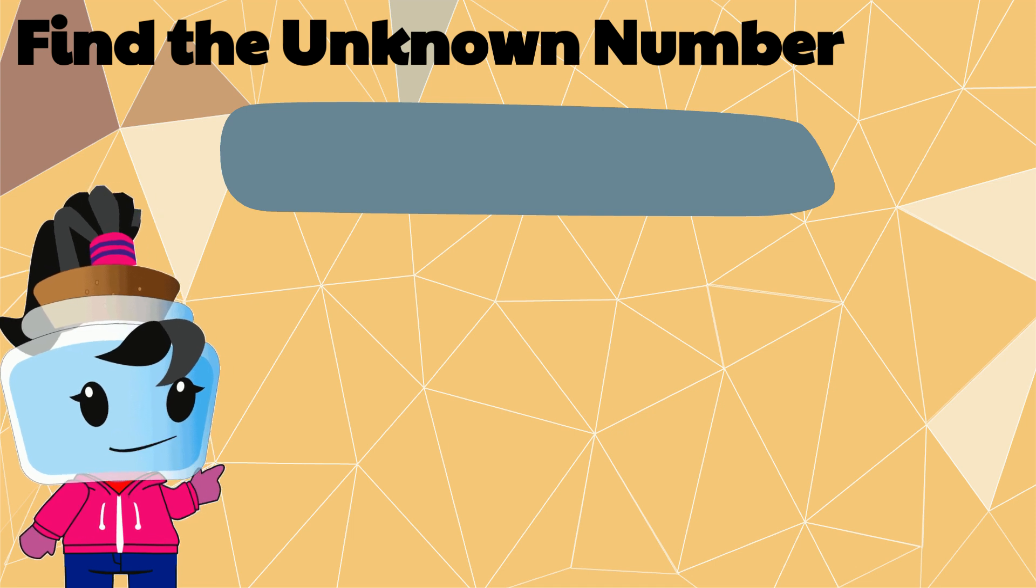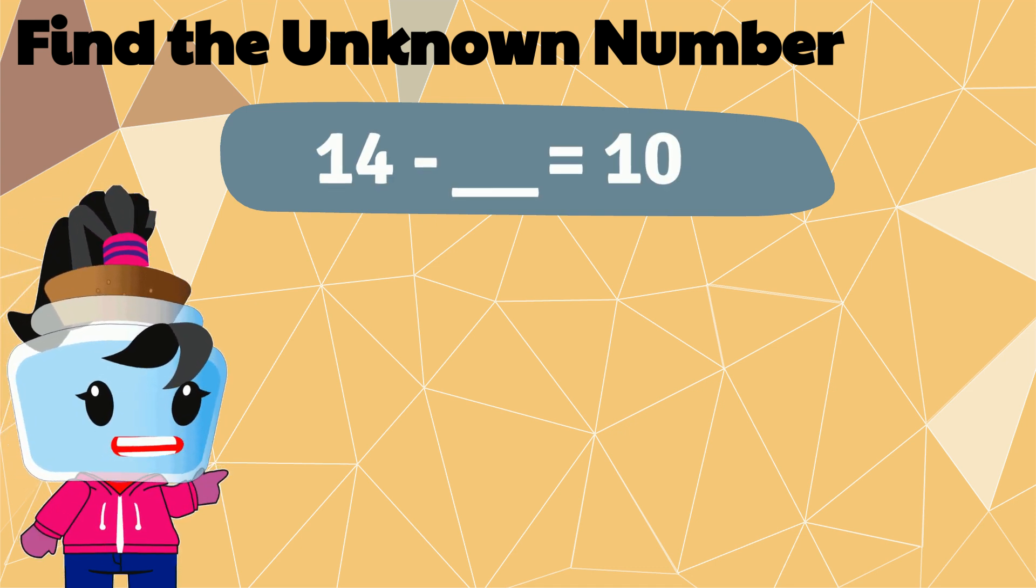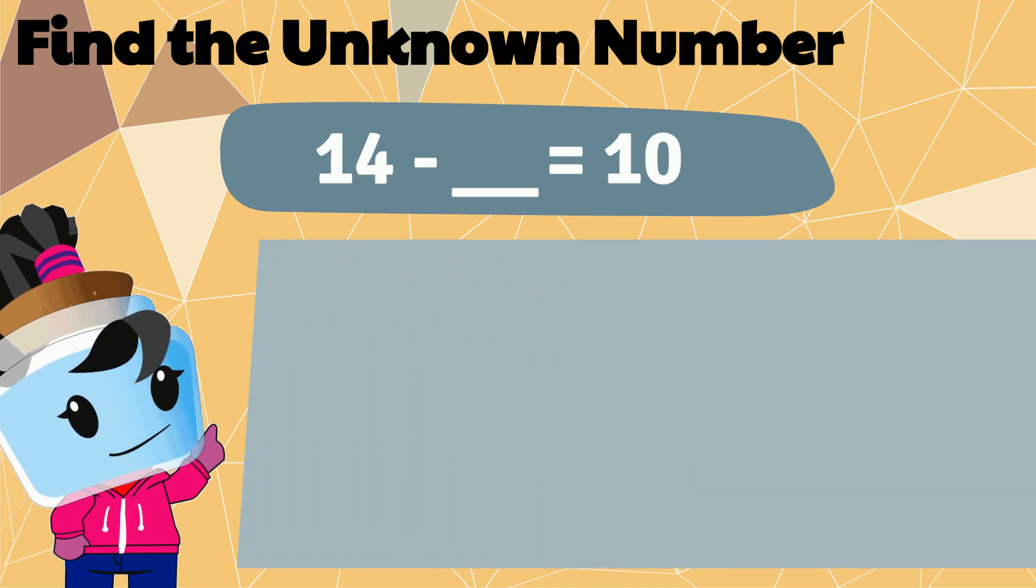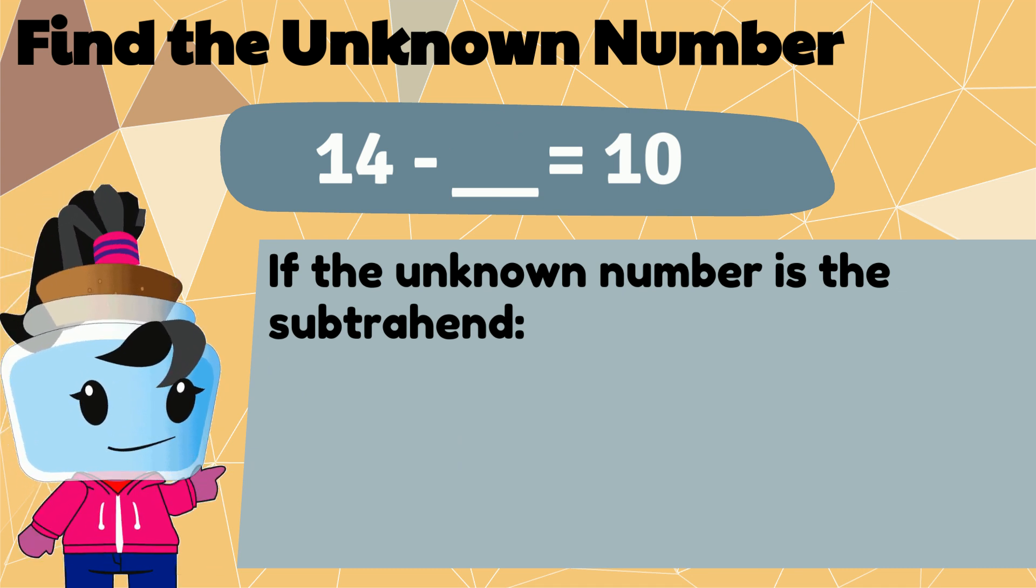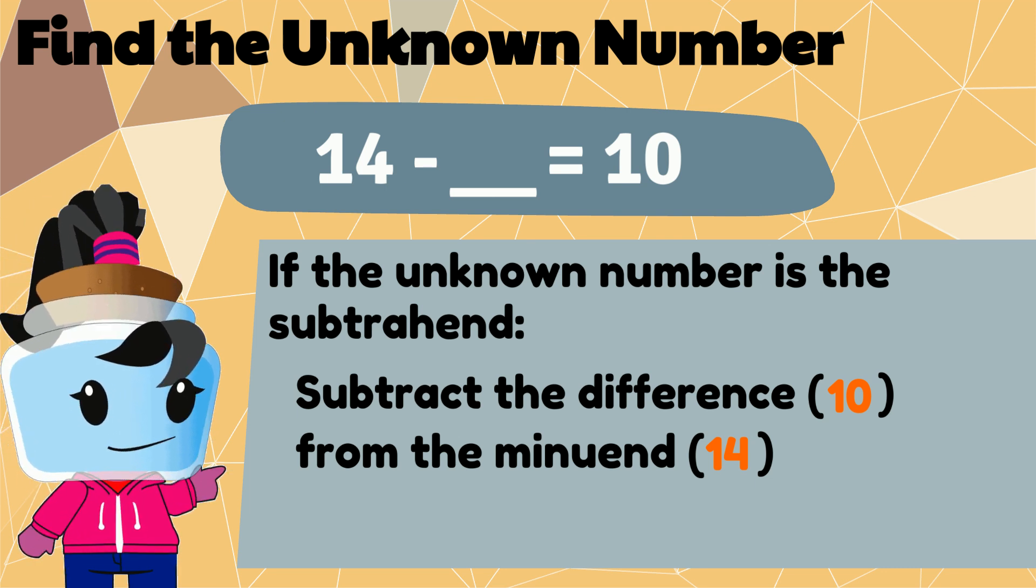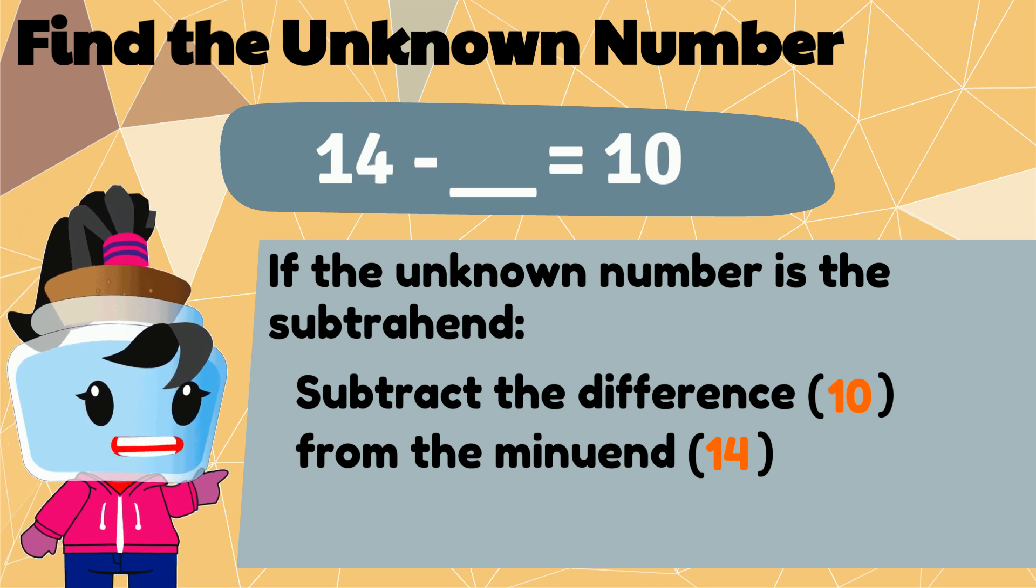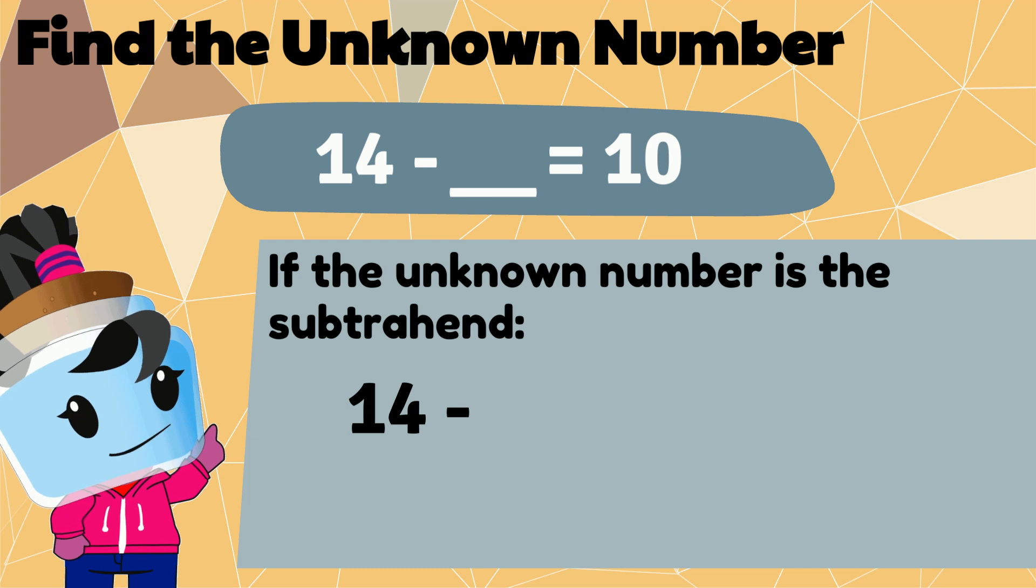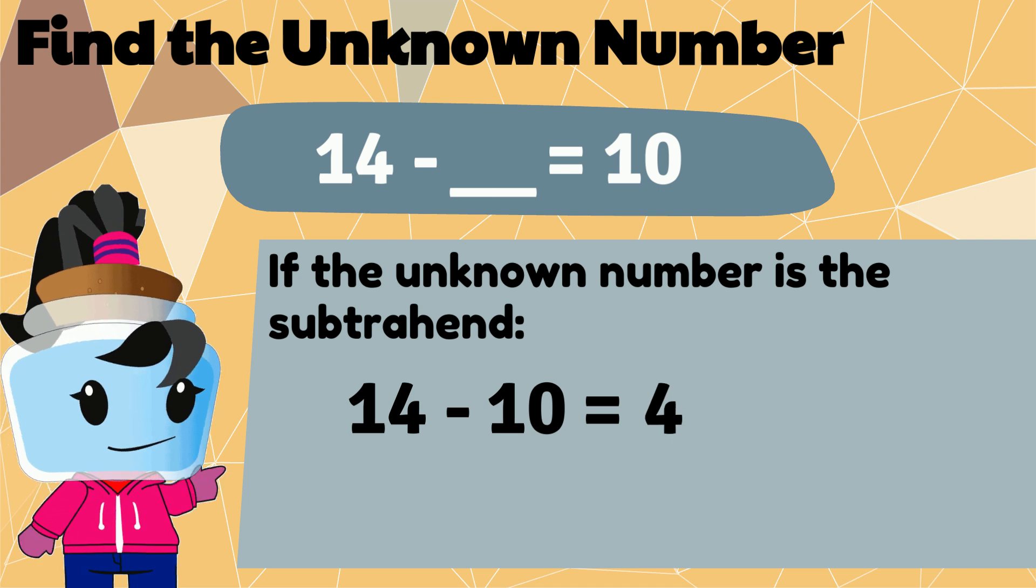Let's try out these subtraction equations as well. 14 minus what unknown number equals 10? If the unknown number is the subtrahend, or the number being subtracted, you can subtract the number on the other side of the equal sign from the minuend, which is the number before the minus sign. 14 minus 10 equals 4, so the unknown number is 4.